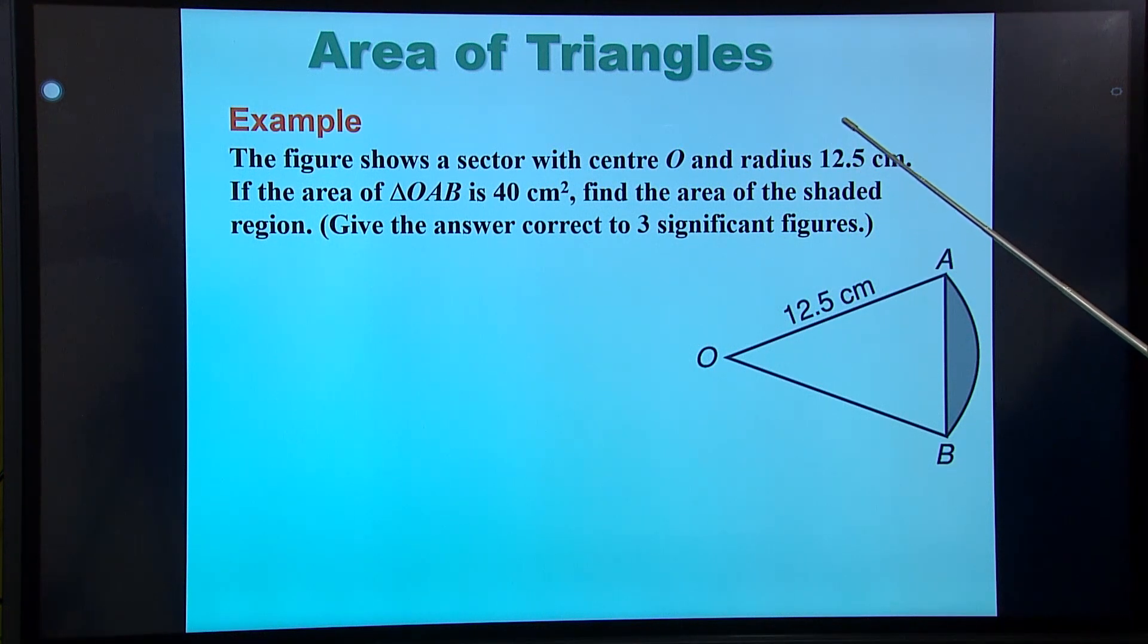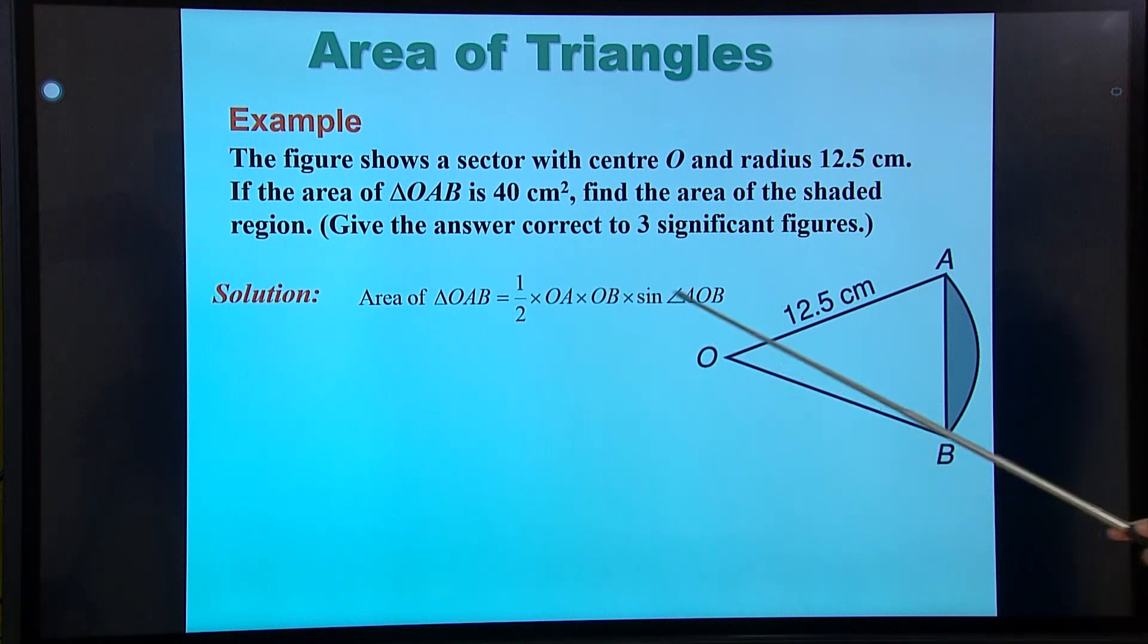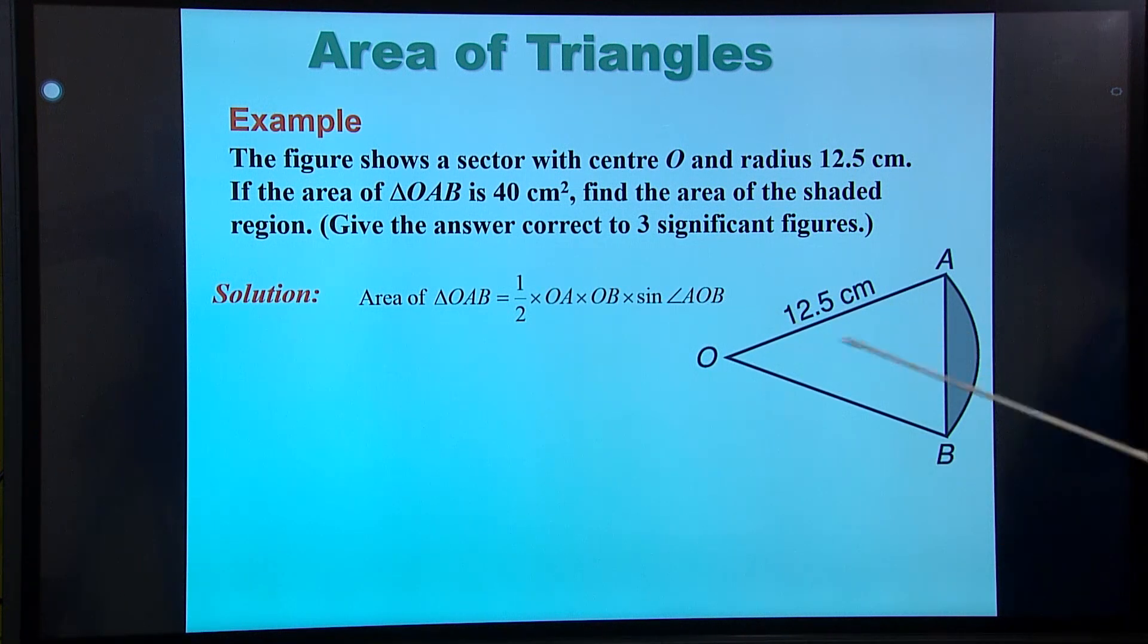Give your answer in this case to three significant figures, different from decimal figures. Let's have a look at how we do this. The area of this triangle is what? Half AB sine C. So if this is a circle, then I know that OA is the radius and OB is the same radius. So I have two sides. I don't have the angle in between. I need to get that angle.